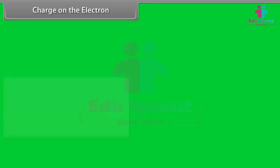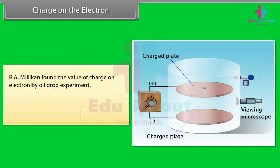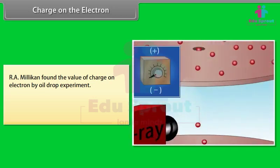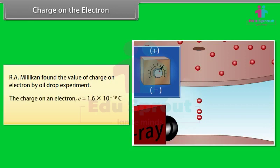Charge on the electron: R.A. Millikan found the charge on the electron using the oil drop experiment. Oil droplets enter through a small hole and fall between two charged plates, observed through a microscope. X-rays ionize the air, and electrons are absorbed by oil droplets. The charge on an electron e = 1.6 × 10⁻¹⁹ coulomb, and the mass of the electron mₑ = 9.31 × 10⁻³¹ kg.